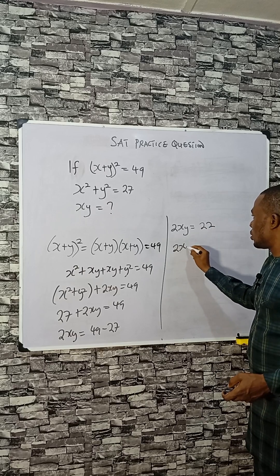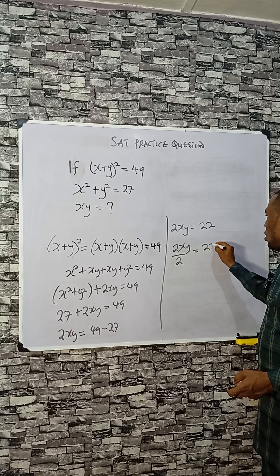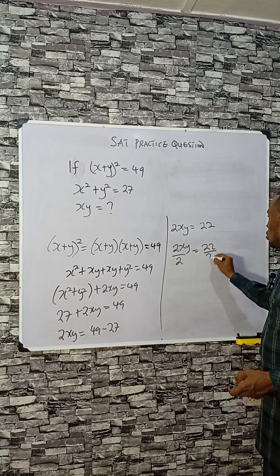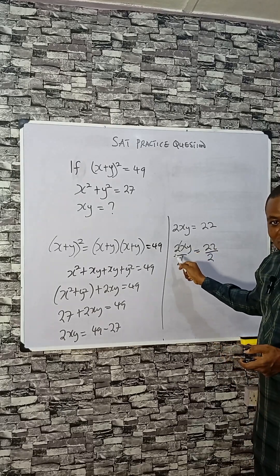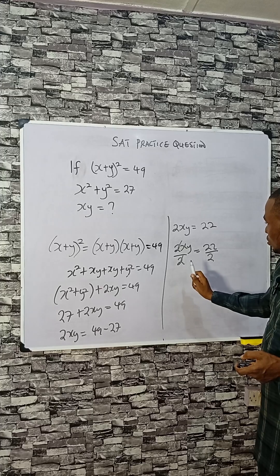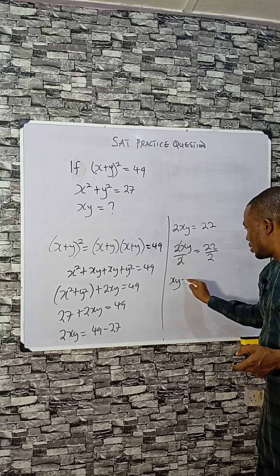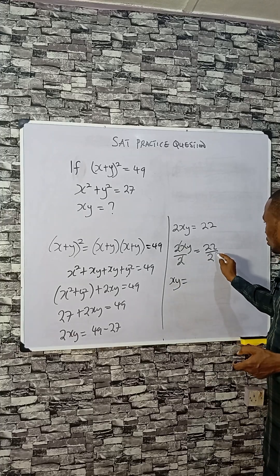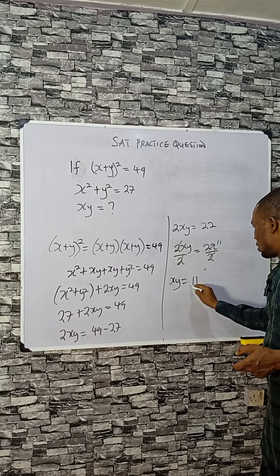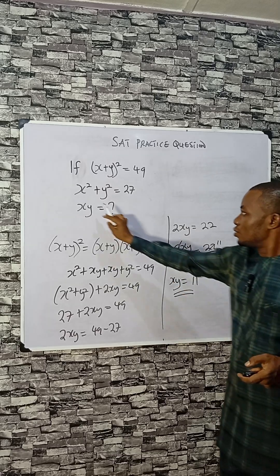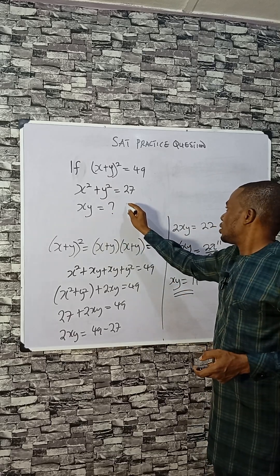Dividing through by 2 to make xy alone: xy = 22 ÷ 2 = 11. So the value of xy is 11.